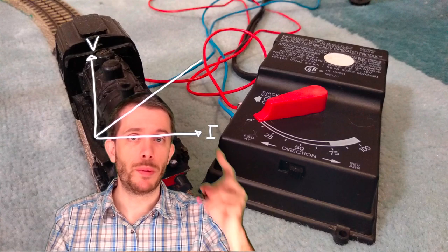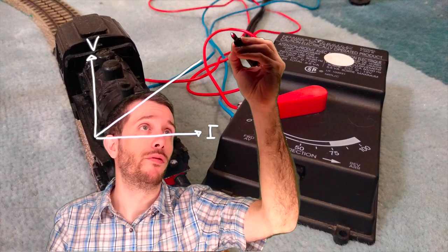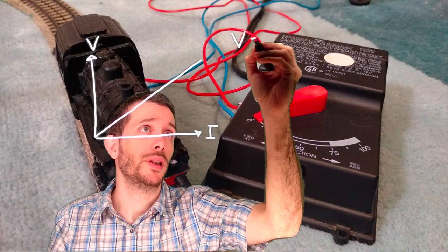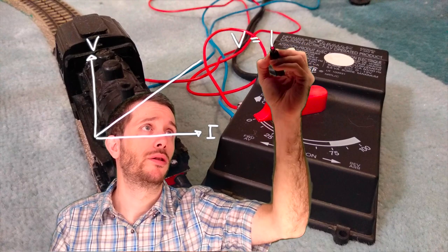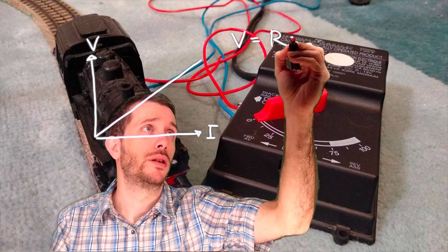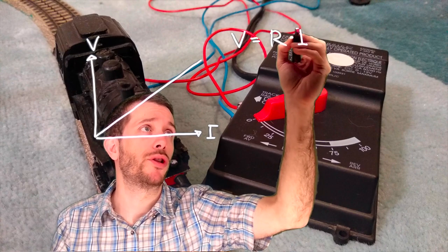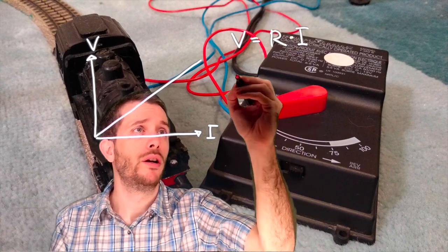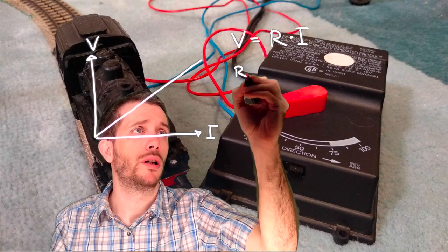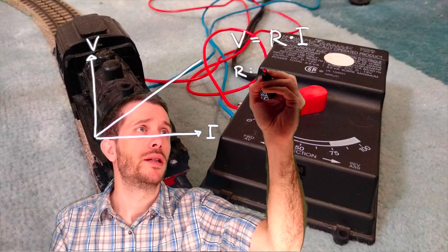This relationship can be written down in the form of voltage is equal to current times a proportionality factor R, which we're going to call resistance.